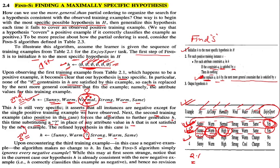That completes the second example. Now for the third example — it is a negative example, so the algorithm makes no change to H. We ignore it and keep the hypothesis as it is. In Find-S, we are only concerned about positive examples; whatever happens with negative examples, we don't bother.